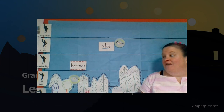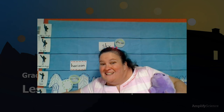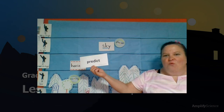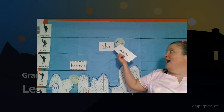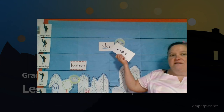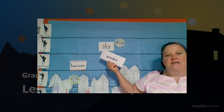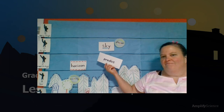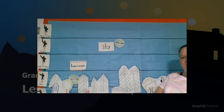My next question is, can you use what we know about where the sun was in the morning and the afternoon to predict where you think it ended up being in the evening? Where do you think it was? Go ahead and point right to the screen. Where do you predict it was?